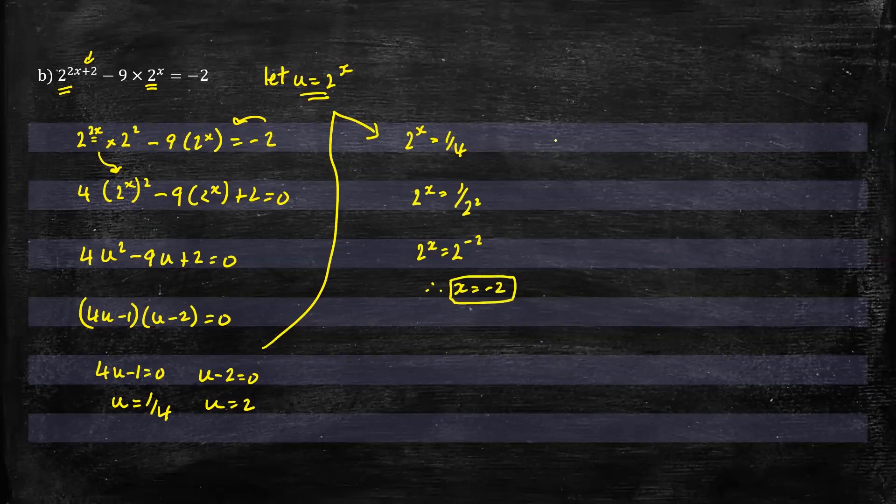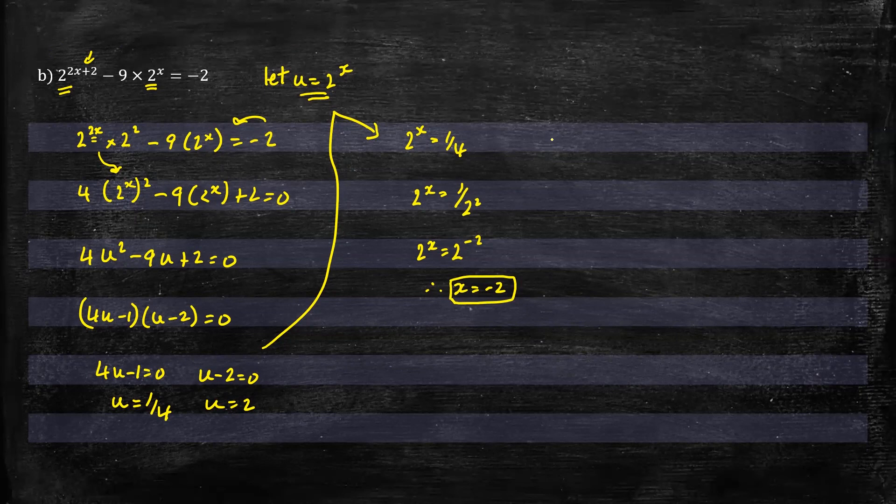And on the other side, we have 2^x equals 2. And from that one, we can see that x will be equal to 1.